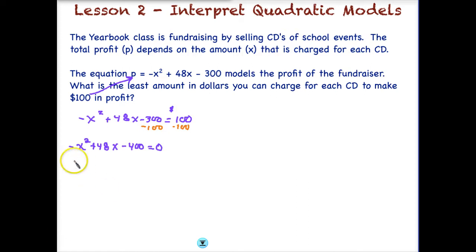Next, in order to use the quadratic formula, remember we need to identify our A term, our B term, and our C term. So, our A term is going to be the coefficient in front of x squared, which it looks like we have a negative in front, so that's a negative one. Our B term is going to be the coefficient in front of just the x term, which is going to be 48, and our C term is the constant all by itself, which is now negative 400.